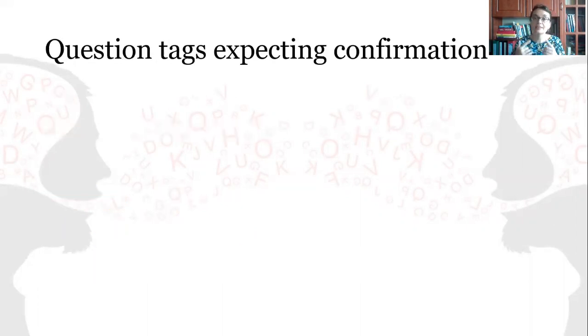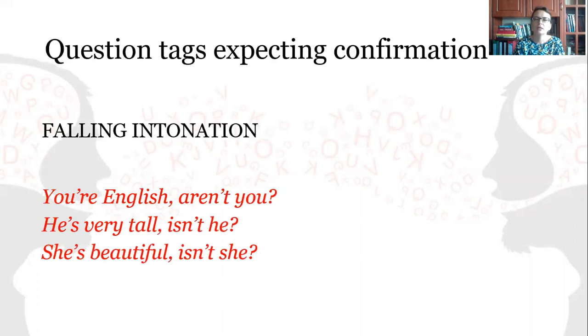Question tags, expecting confirmation. What do you think? Falling intonation, yes. You're English, aren't you? He's very tall, isn't he? She's beautiful, isn't she? So, we are not asking to find out something new. We are just looking for confirmation. We know it's like this. Actually, these types of question tags are used in conversation to have small talk.